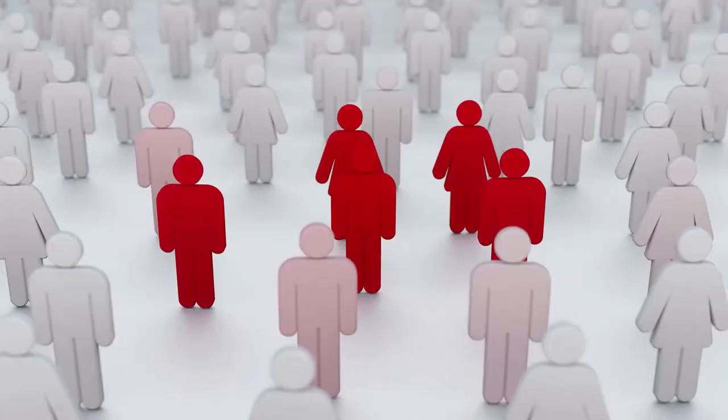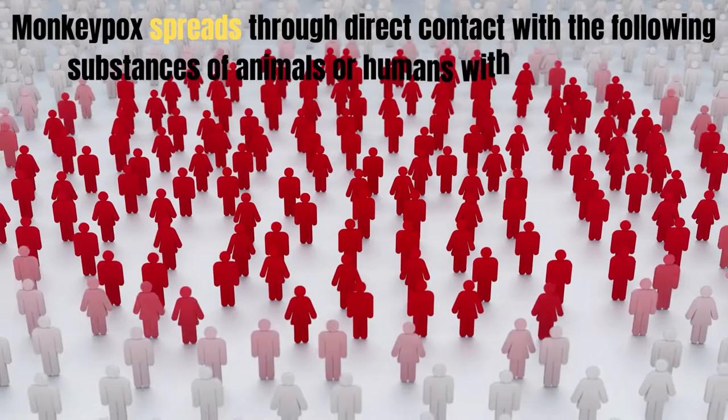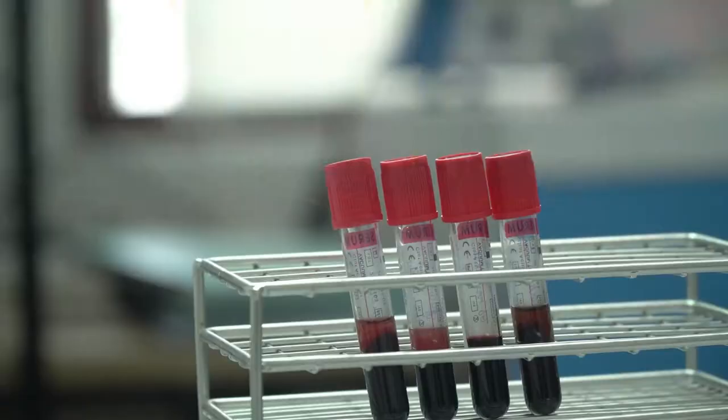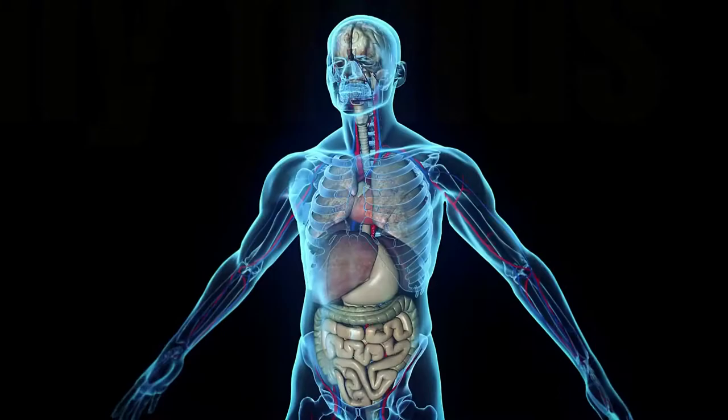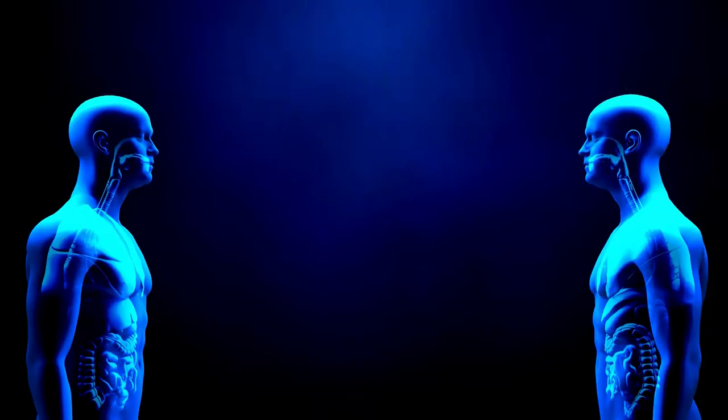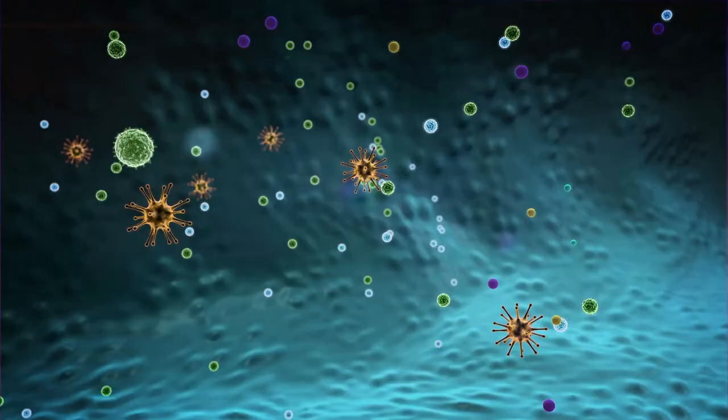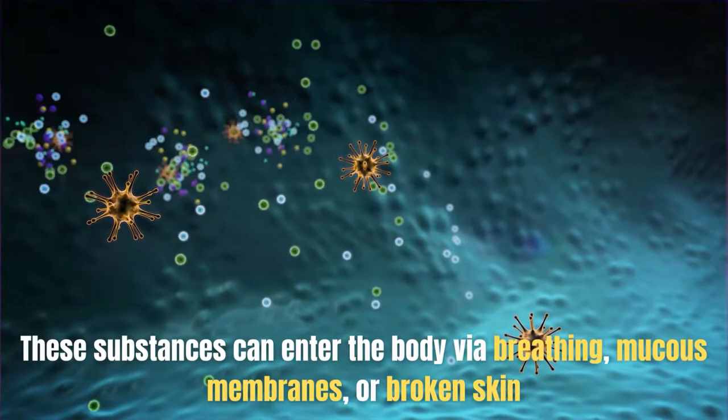Monkeypox spreads through direct contact with the following substances from animals or humans with the infection: blood, bodily fluids, skin or mucus lesions, and respiratory droplets for human-to-human contact. These substances can enter the body via breathing, mucous membranes, or broken skin.